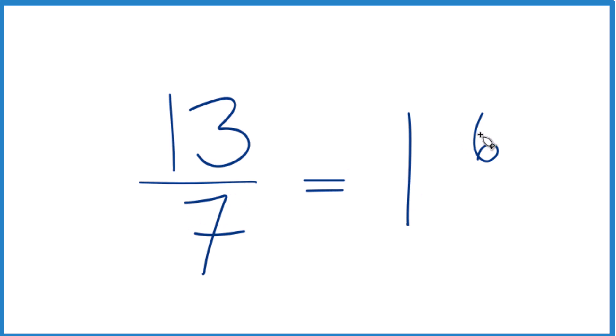So 7 plus 6, that gives us the 13. Then for the denominator, we just bring the 7 across, and that's it.